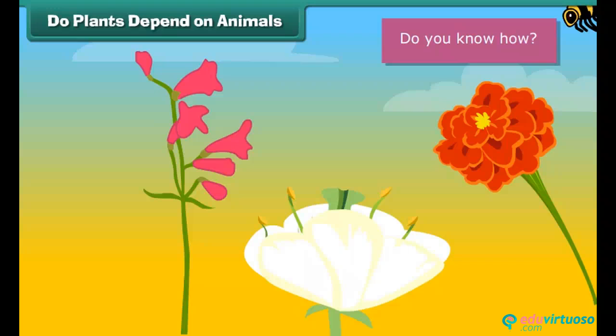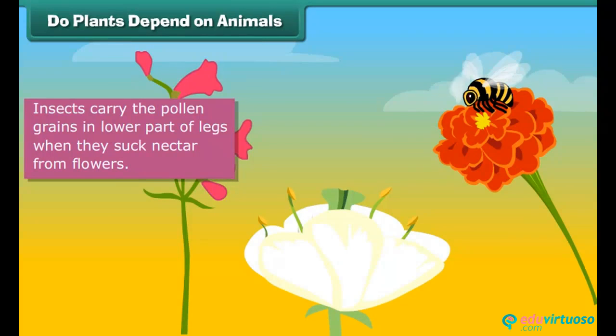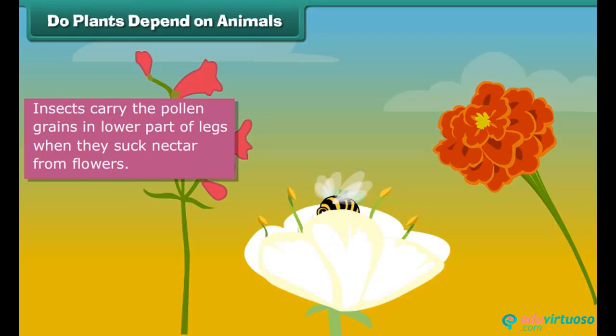Let us see this. Many insects, bees and butterflies carry the pollen grains in the lower part of their legs. When they sit to suck nectar from flowers and move from flower to flower, they spread the pollens carried by their legs. This is how they spread the plant seeds.